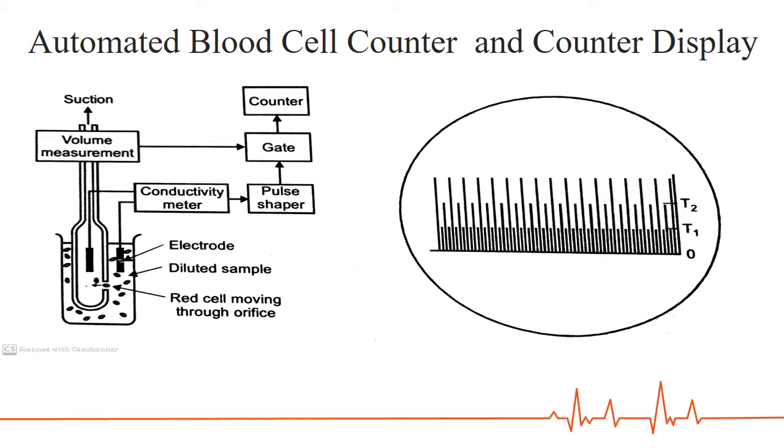Or the R out since delta R is going to be greater than the R. The next one diagram is the counter display in terms of impulses. The impulses having highest peaks are fewest in number. These are due to WBCs which makes the highest resistance change in the orifice. The RBCs are represented by the peaks between threshold T1 and T2.